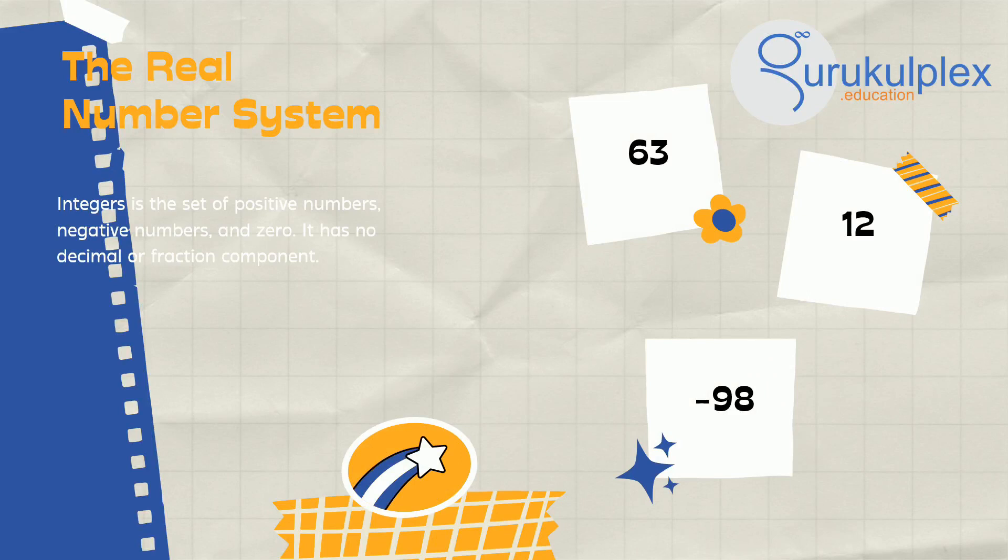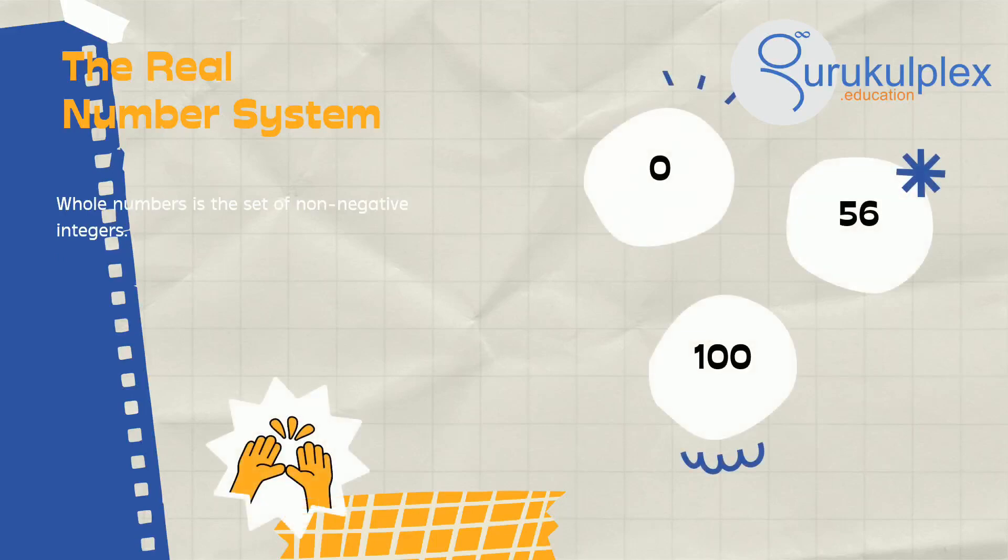In this intricate plane, real numbers align with the horizontal axis, while imaginary numbers traverse the vertical axis.